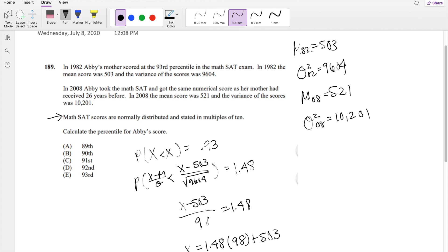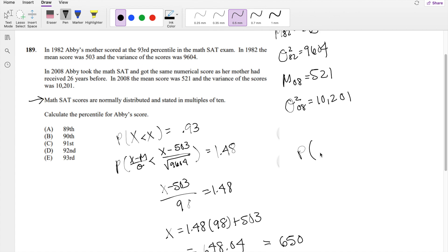So we can kind of clearly see her score, her percentile is going to be lower than her mom's, which was 93rd, because the mean is higher. So here, probability that x is less than 650 is equal to what?